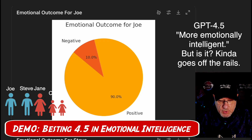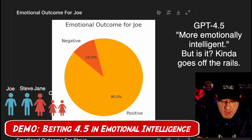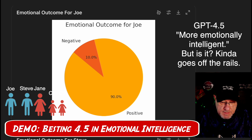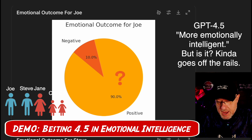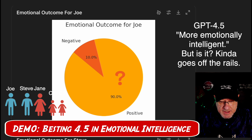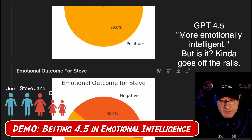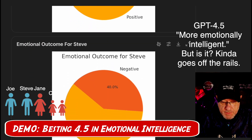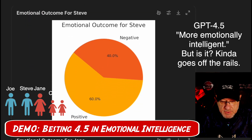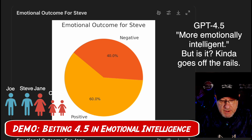This is the emotional outcome for Joe, who is going to invite Steve and his family to the haunted house, and he's really excited. He's got a 90% positive and 10% negative, even knowing that his friend's family has had some problems with haunted houses in the past. And this is the outcome for Steve, who is mostly positive — 60% positive and 40% negative — on what's going to happen if that outing occurs.